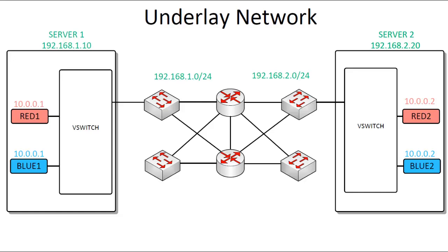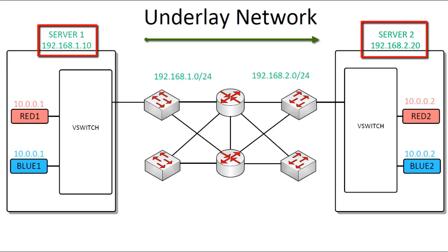Now let's see how an overlay network can handle these issues. For this example, virtual switches will serve as virtual network endpoints and VXLAN will be used for the tunneling mechanism. Keep in mind there are other solutions — for example, hypervisors could be the virtual network endpoints, and other tunneling protocols like NV-GRE could be used. With tunneling, the only requirement for the underlay network is IP connectivity between physical servers, meaning Server 1 at 192.168.1.10 can reach Server 2 at 192.168.2.20. With this assumption, the details of the underlay network can be abstracted away.